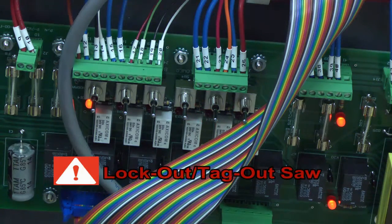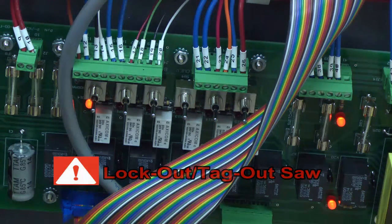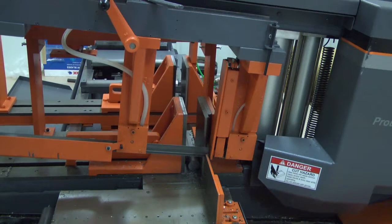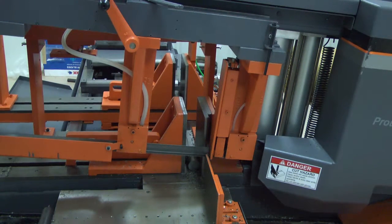Return the saw to the lockout tagout state before proceeding with any work. Before attempting to access the feed forward switch, check to be sure the feed is to the rear of the feed table.